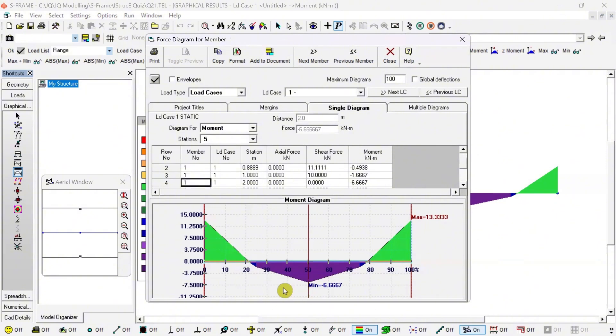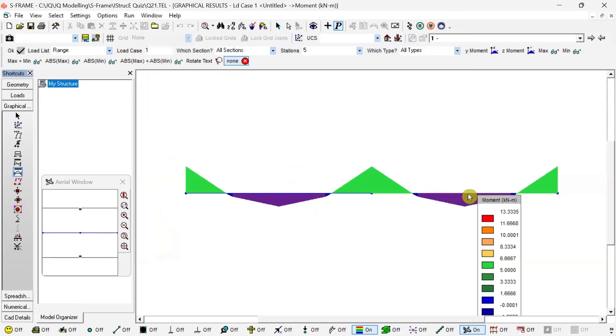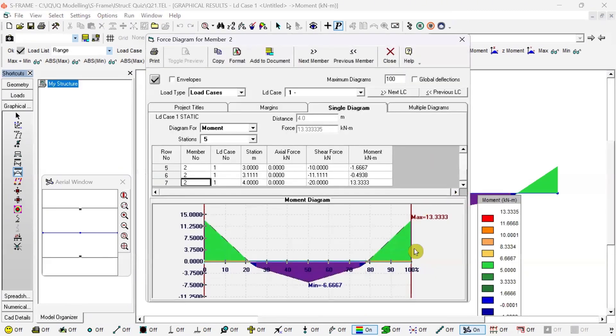And the second moment is similar to what we got, which was 6.667. If you click on the other span as well, it will show you the same values: 13.33 and 6.67.